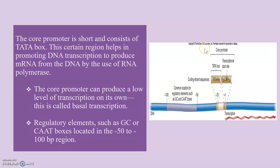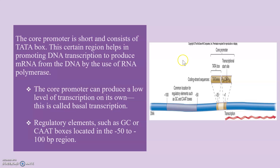The core promoter is short and consists of the TATA box. This certain region helps in promoting DNA transcription to produce mRNA from the DNA by the use of RNA polymerase. The core promoter can produce a low level of transcription of its own, which is called the basal transcription.